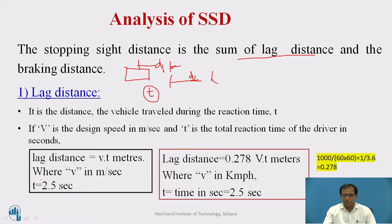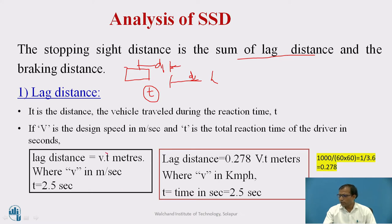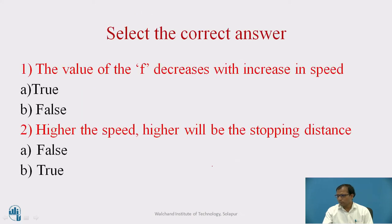As per the IRC recommendation, the reaction time t is taken as 2.5 seconds. To convert from meters per second to km/h, we divide by 1000 and divide by 3600 (i.e., 60 × 60), giving a conversion factor of 1/3.6 or 0.278. So lag distance where v is in km/h becomes 0.278 × v × t.